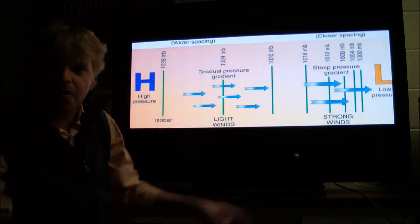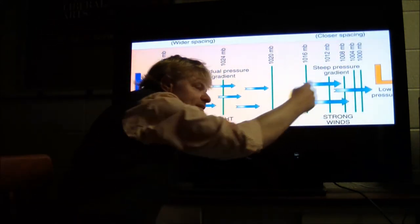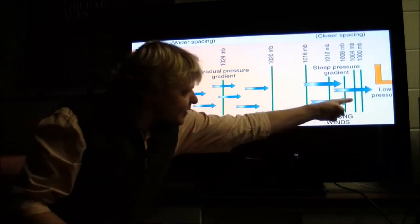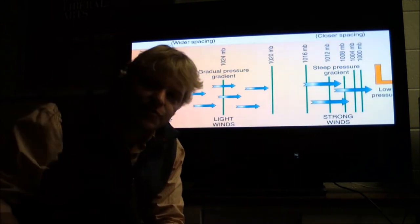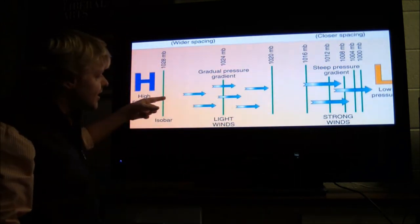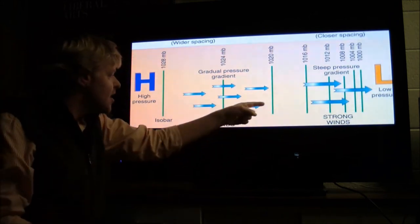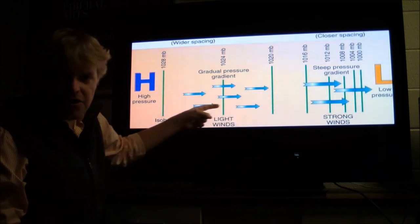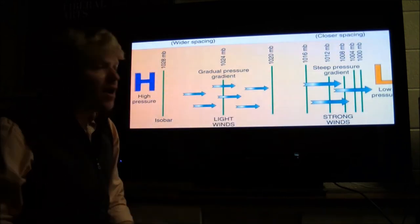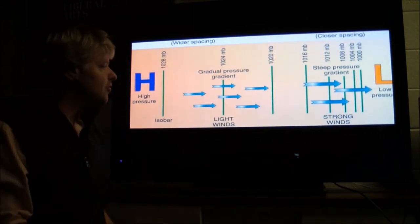But another characteristic is when these lines are close together, like we see here, we should expect faster winds. Whereas over here, because those isobar lines are spread out over more of an area, we should expect much lighter winds than we would find over here closer to this low pressure.